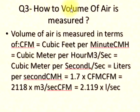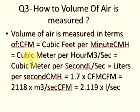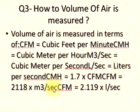Q3: How is the volume of air measured? Volume of air is measured in terms of: CFM = cubic feet per minute; CMH = cubic meter per hour; M3/s = cubic meter per second; L/s = liters per second. CMH = 1.7 × CFM; CFM = 2,118 × M3/s; CFM = 2.119 × L/s.